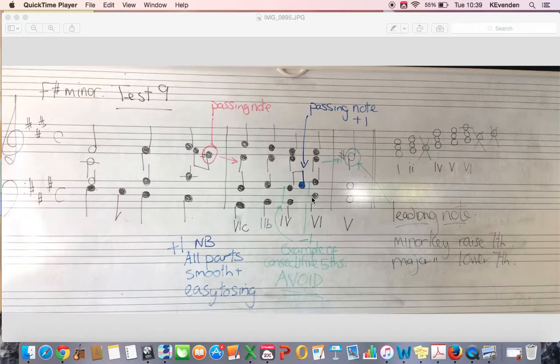These are fifths in a row. You must not use them. You need to avoid them. Now one way of avoiding them is trying to keep the alto and the tenor lines pretty static as I've done here, so no big leaps or anything.